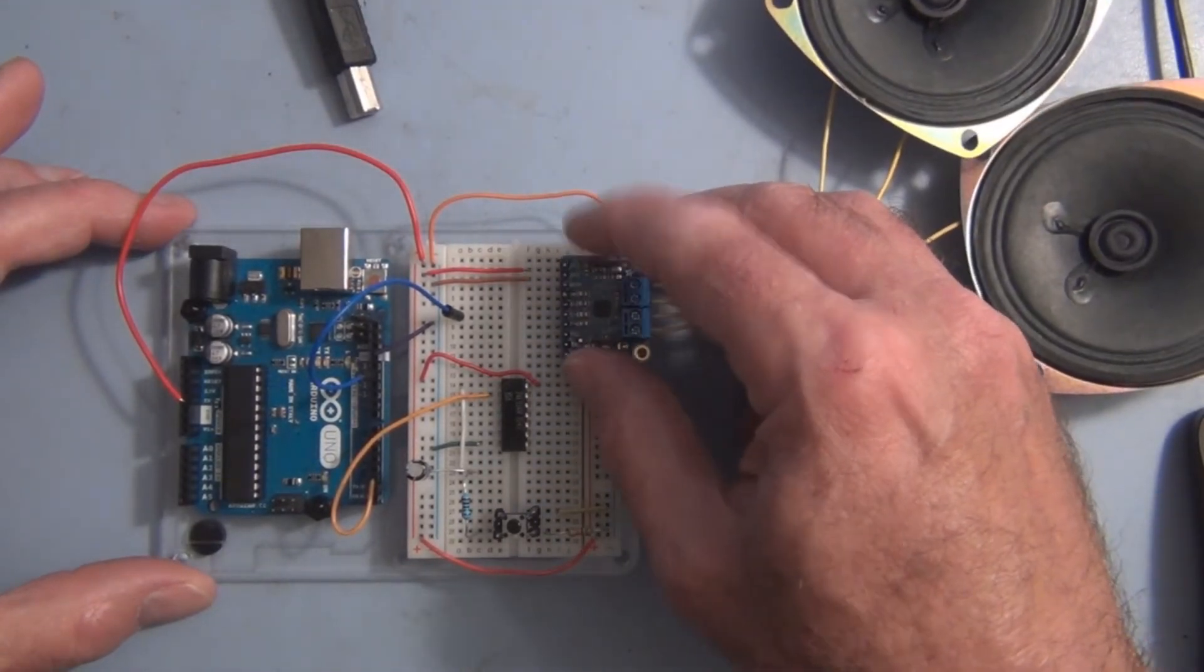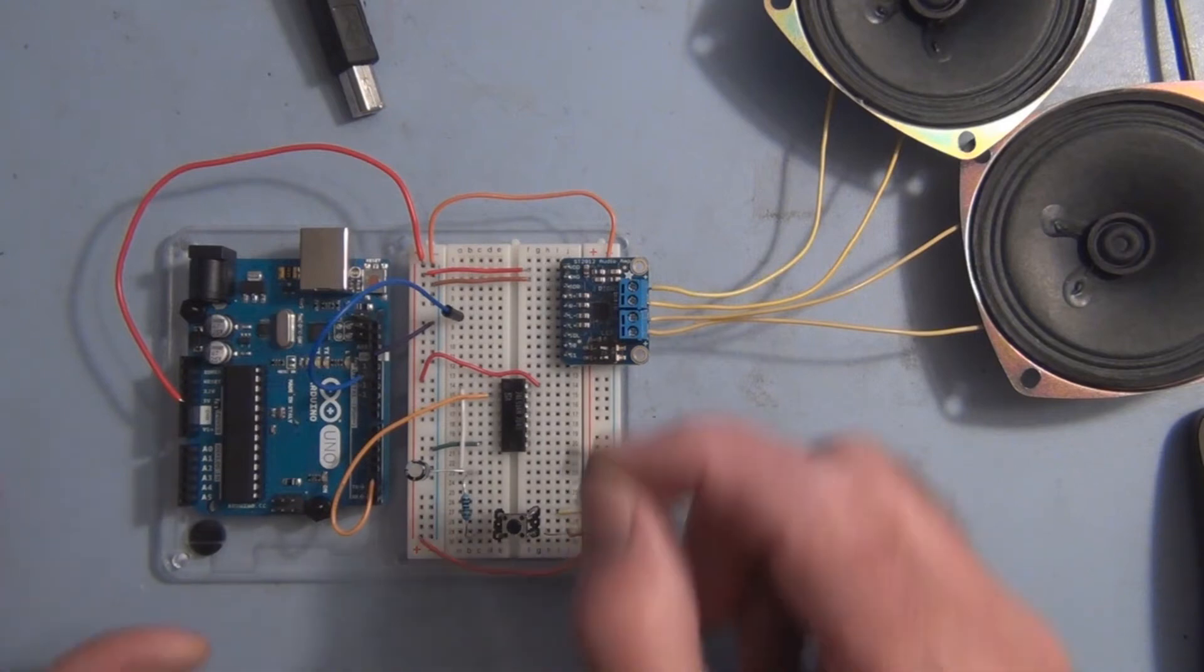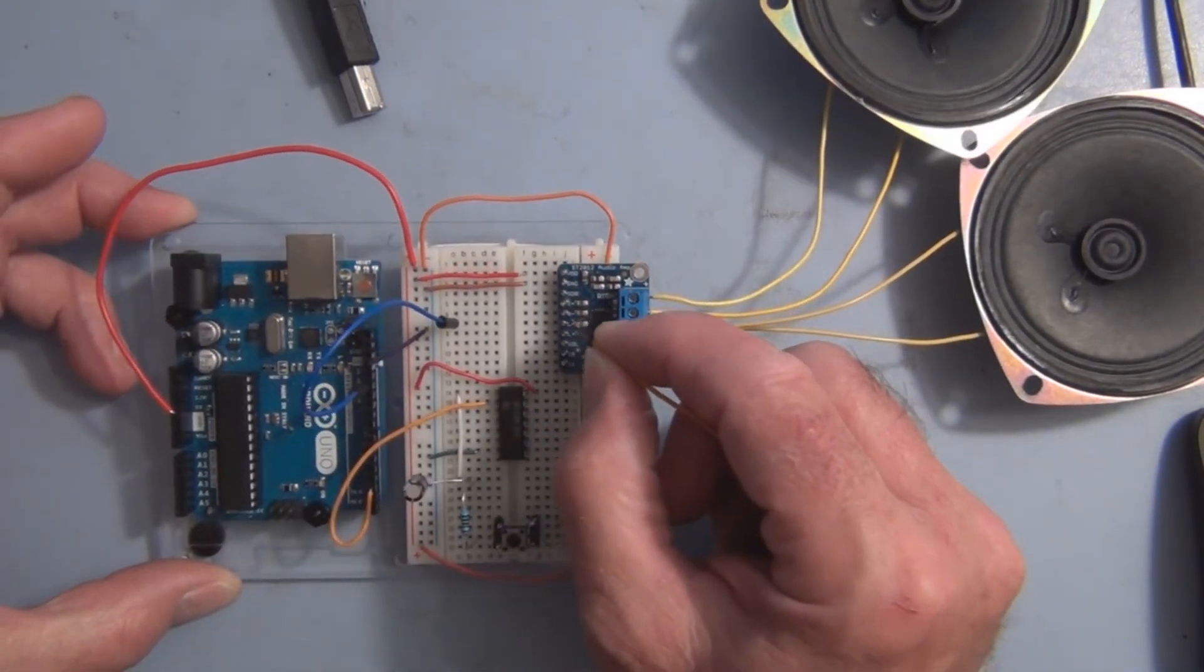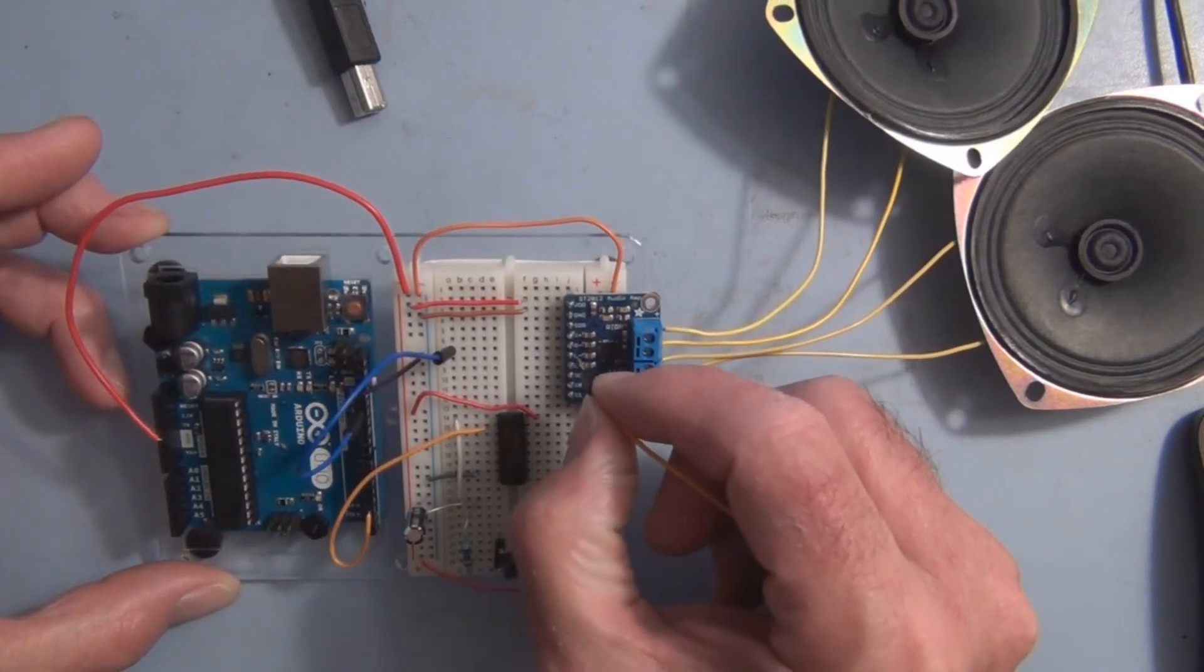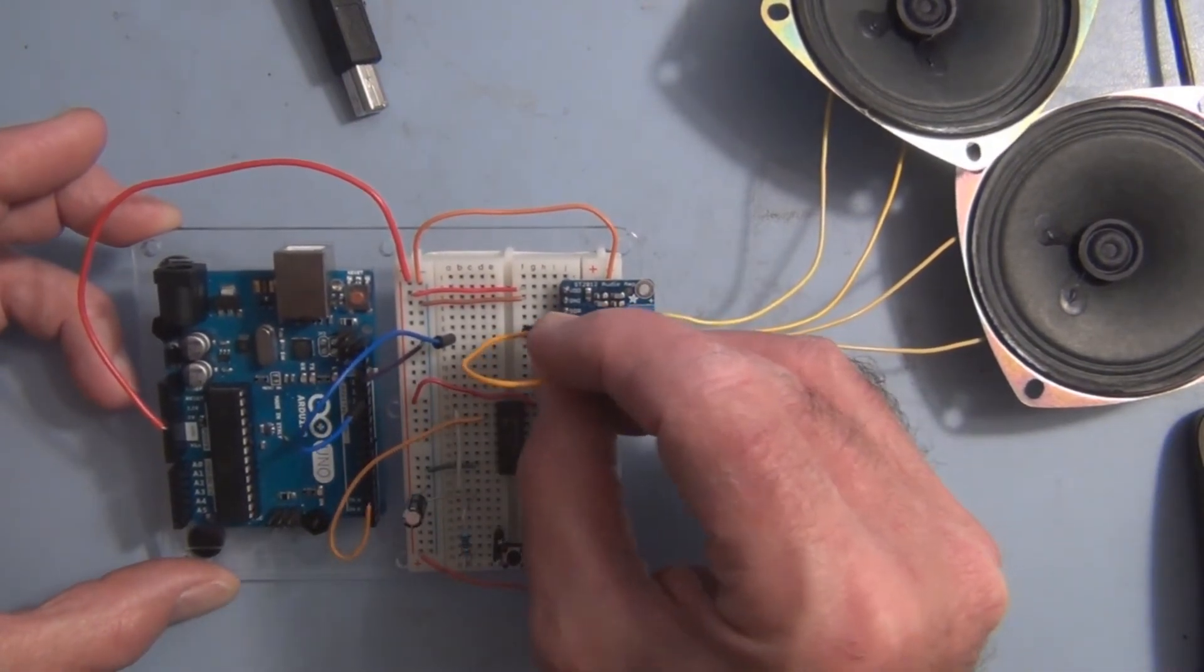Plug this in and let's see. I want to tie the right and the left negative channels here together. So this and this tied together.